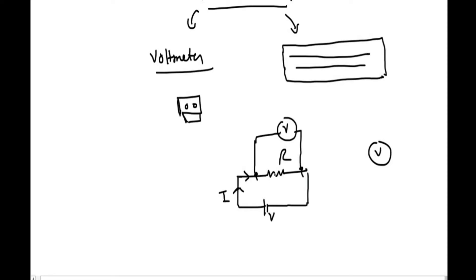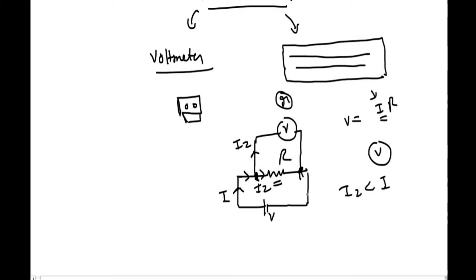When current I is flowing in the circuit and I insert the voltmeter in parallel, the voltmeter has some resistance, so it will draw some current from I. Initially current I was passing through the resistance, but now a current less than I will pass through it. The current I gets divided — I1 goes through the voltmeter and I2 goes through the resistance. Since I2 is smaller, the potential at the ends will decrease.